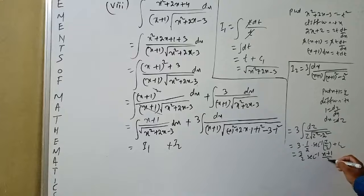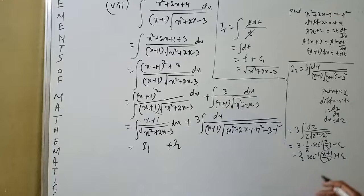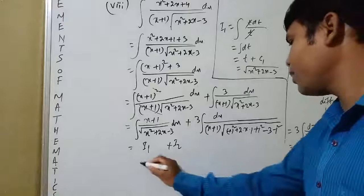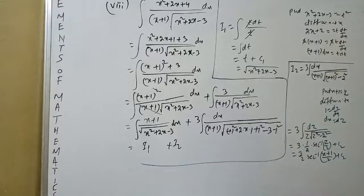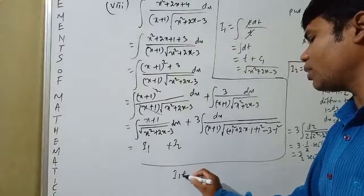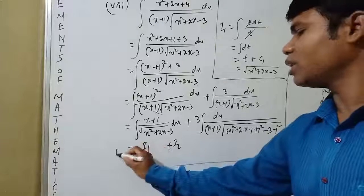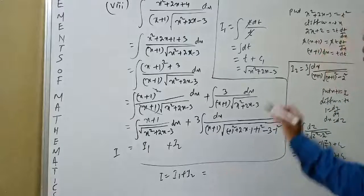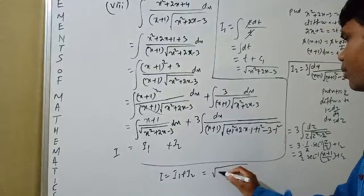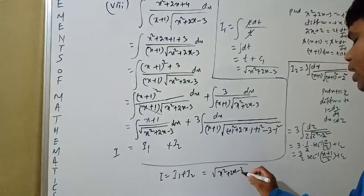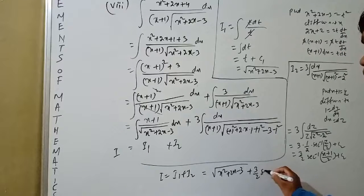Now add I1 plus I2. The total integration I equals I1 plus I2, which is root over (x²+2x-3) plus (3/2) sec inverse ((x+1)/2) plus c, where c equals c1 plus c2.